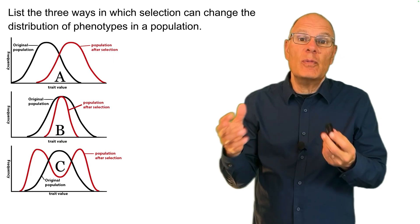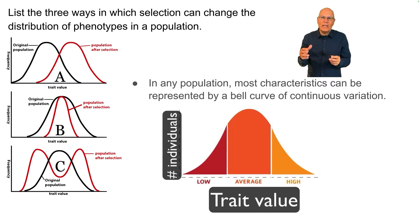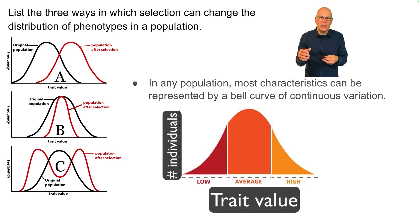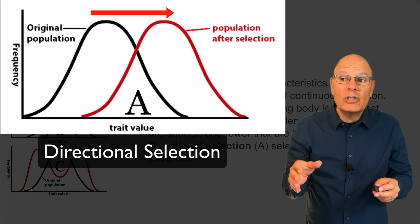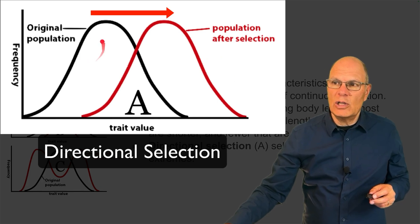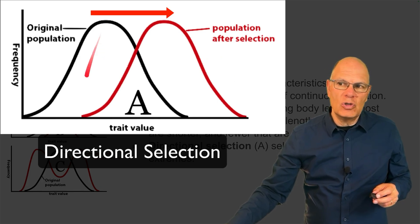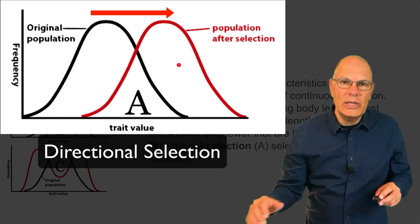Selection can change the distribution of phenotypes in a population in a variety of ways. In any population, most characteristics can be represented by a bell curve of continuous variation. Directional selection selects against one of the extremes — for example, the original population is pushed away from one extreme, shifting the population in one direction.